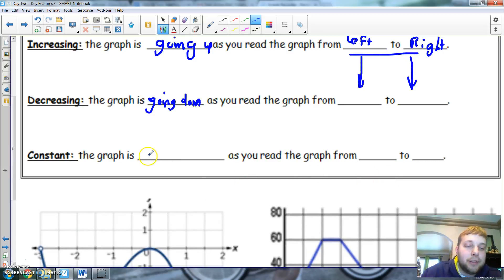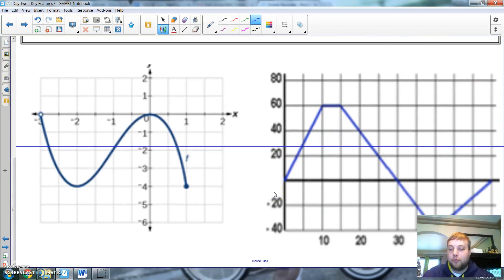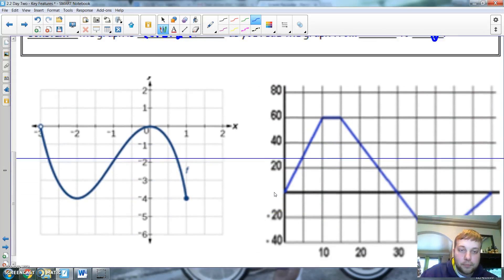And then, obviously, constant means the graph is—can I use constant? Constant? I'm going to use it. It's constant. It means it doesn't change. It doesn't go up. It doesn't change. Constant. As you read the graph from left to right. So, for situations.